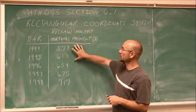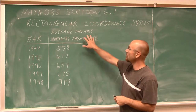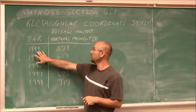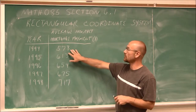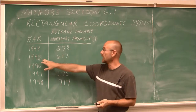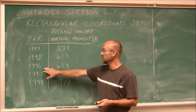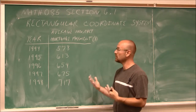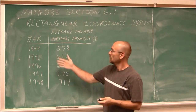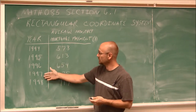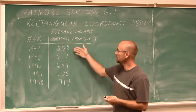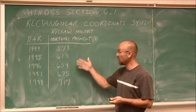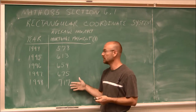Let's look at this data we have. This has to do with average monthly mortgage payments by year. In 1994, the average monthly mortgage payment was $578. In 1995, it was $613. In 1996, $654, and so on. If we just look at the data, we can come to some conclusions. As the year increases, we see that the average cost of a mortgage increases as well. So our payment increases, and we can see that pattern of increasing.